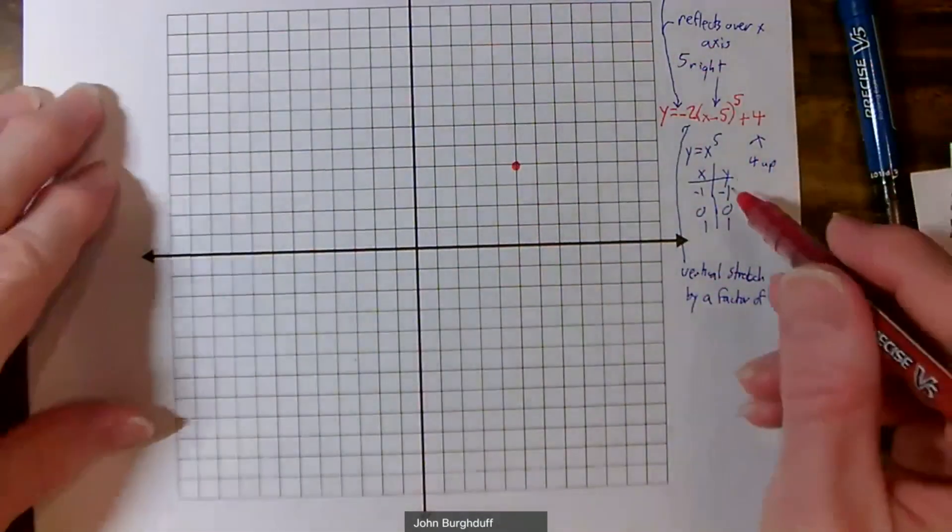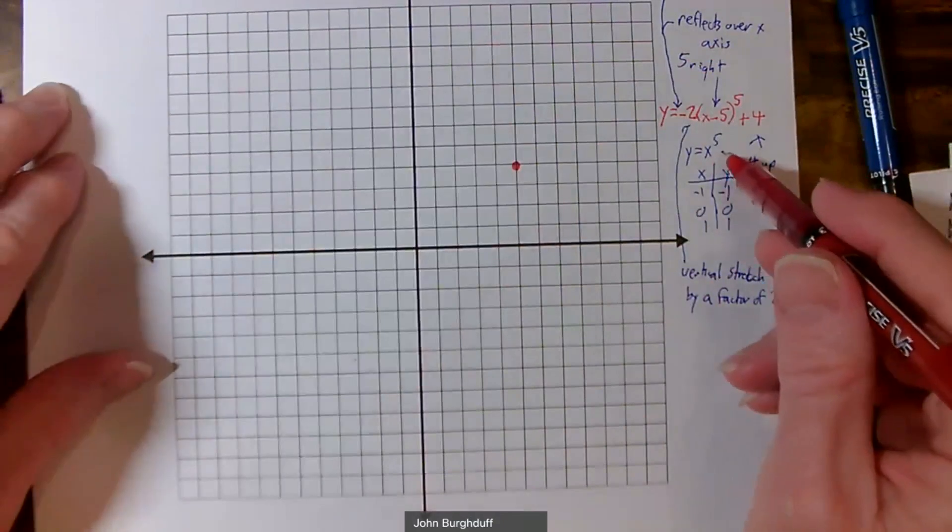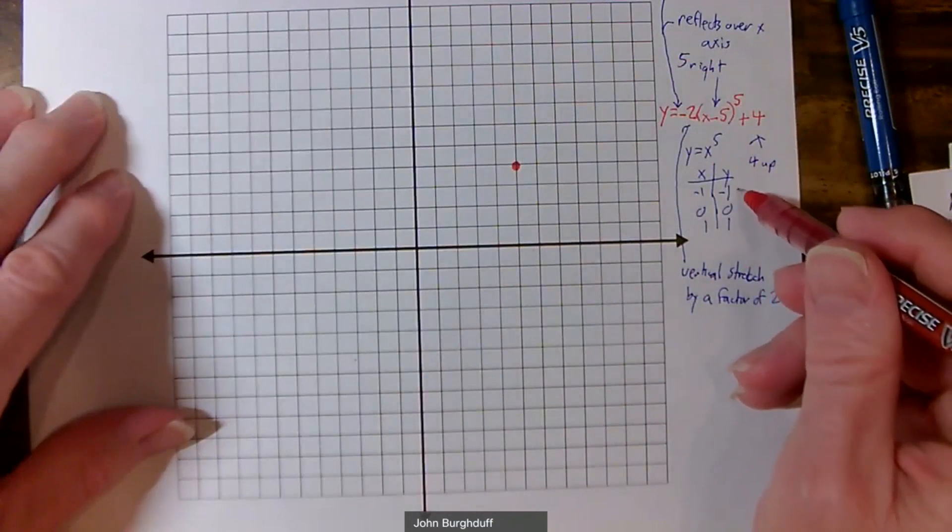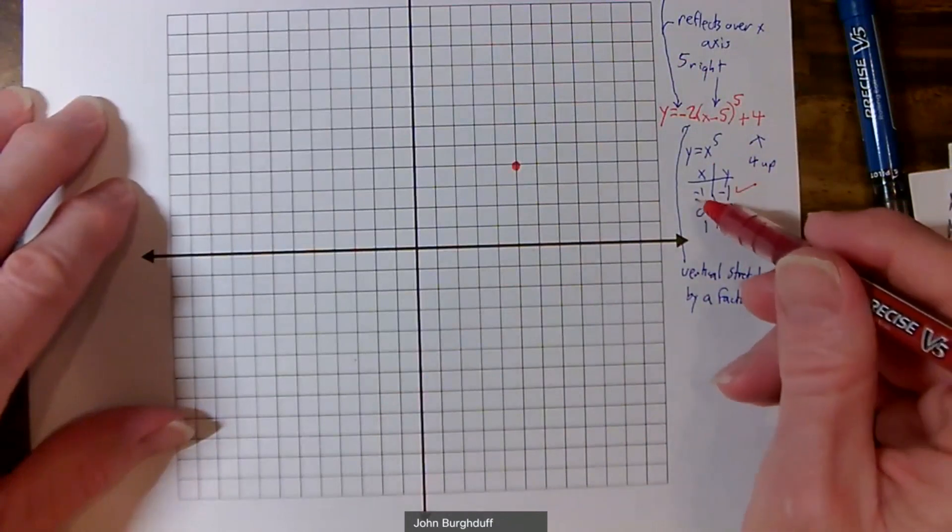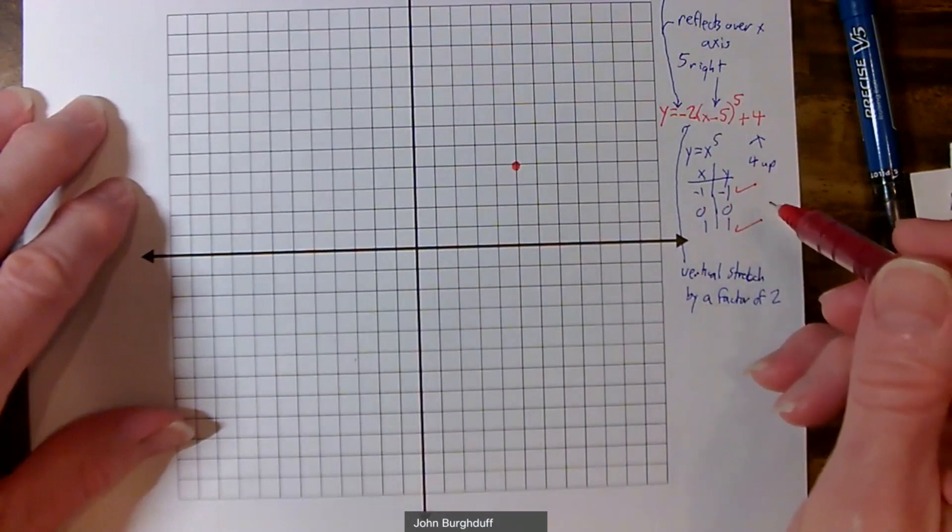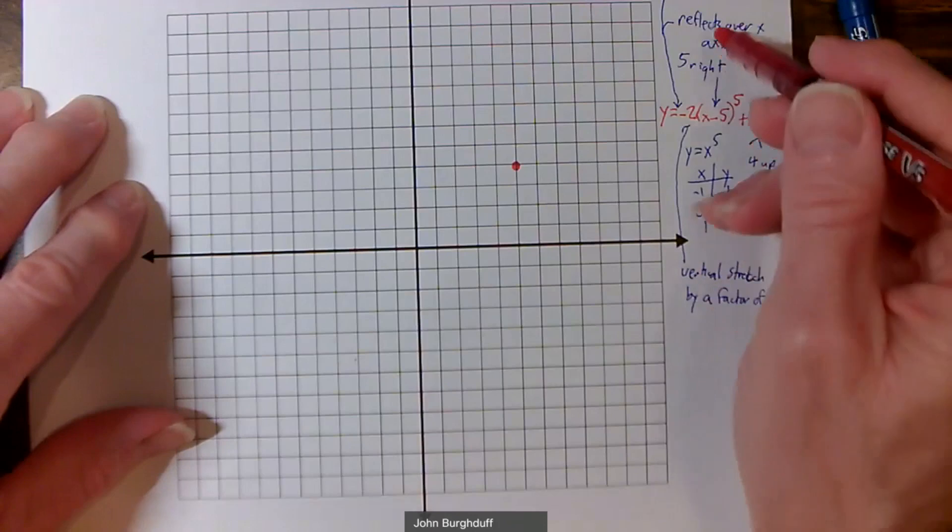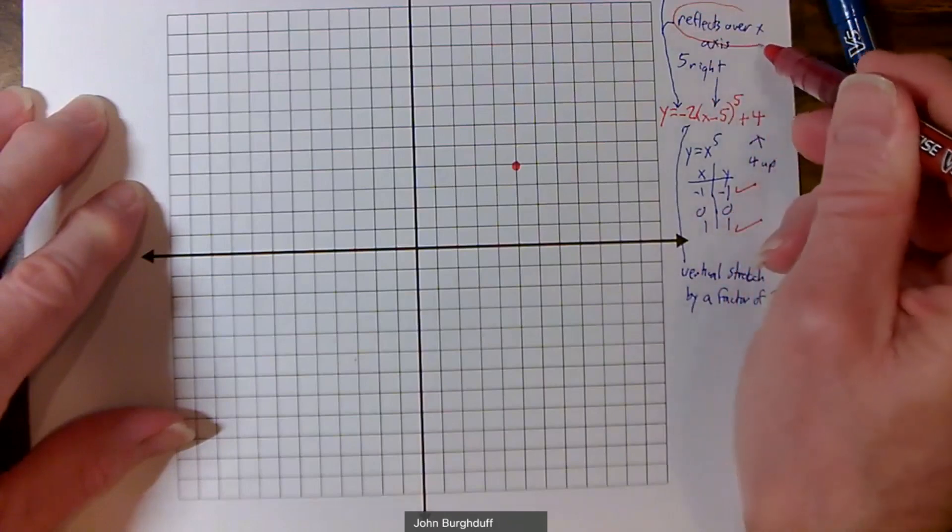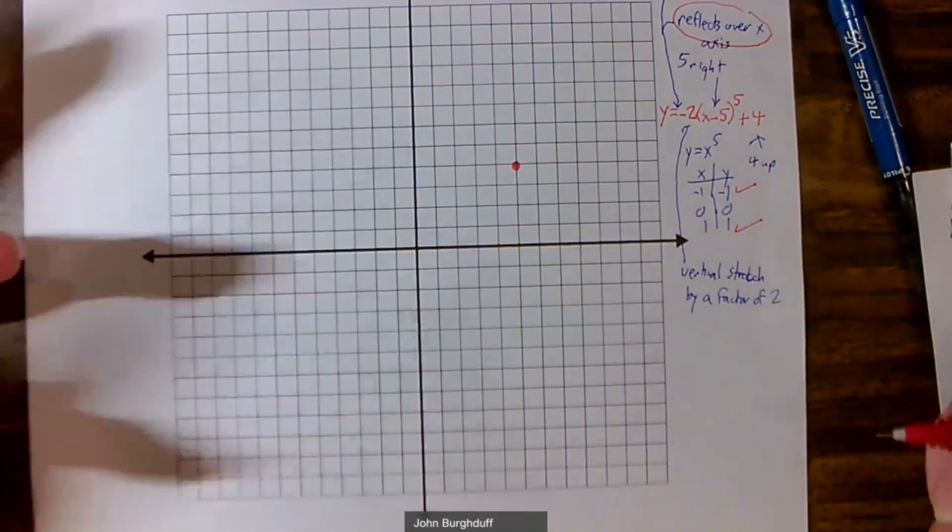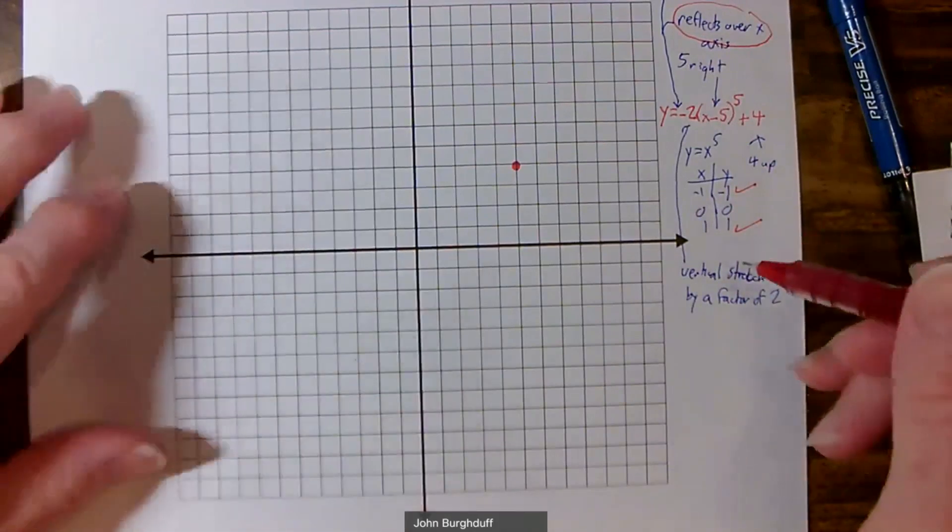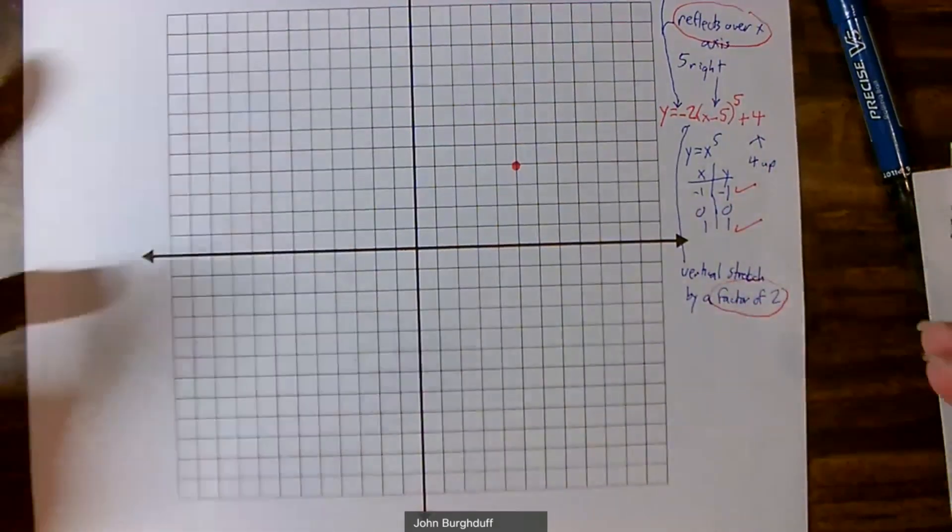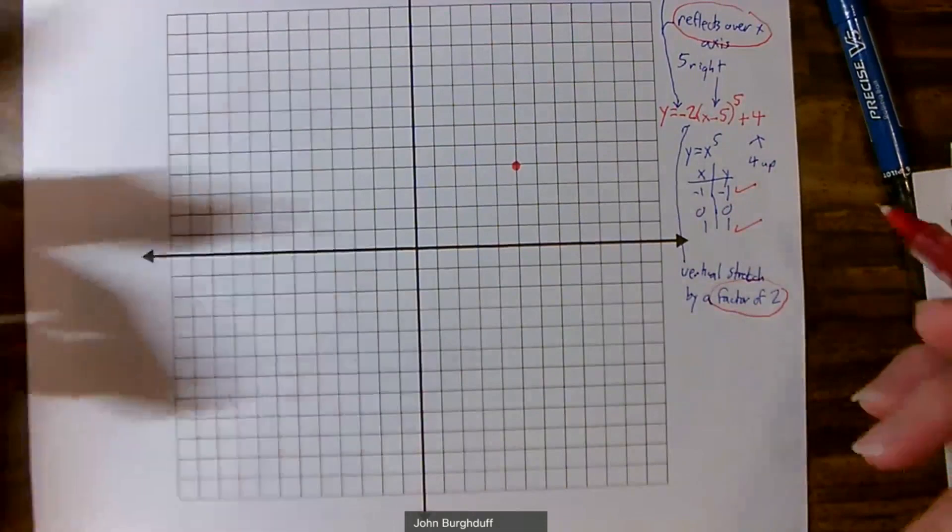Now, if we think about the basic graph, y equal x to the 5th, the way to interpret these few simple points is that this point would be 1 to the left and 1 down. And this point would be 1 to the right and 1 up. But if we are reflecting over the x-axis, instead of going down, we go up. Instead of going up, we go down. And because we have a stretch factor, we're not going to go up by 1 or down by 1, but by 2. So what does that mean?